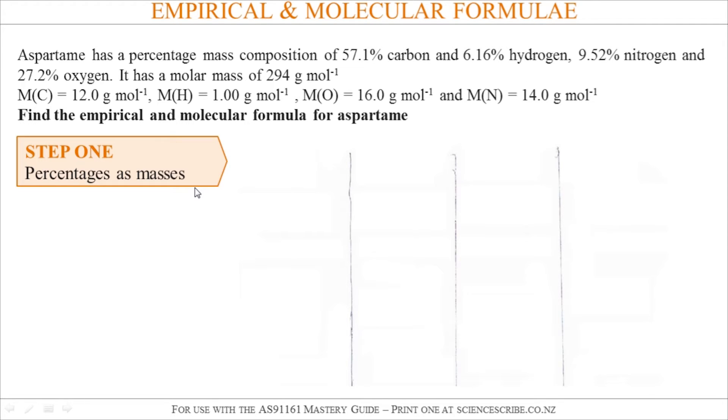The first step to getting the empirical formula is to take all of these percentages and write them as masses. So 57.1% carbon gets written as 57.1 grams. Same story with hydrogen, nitrogen, and oxygen. Just take all those percentages and write them as grams.